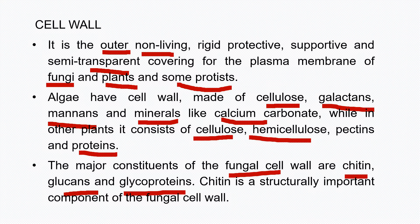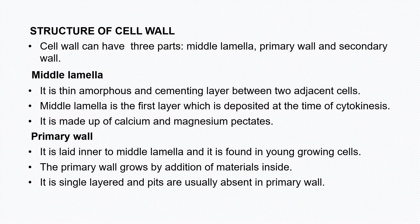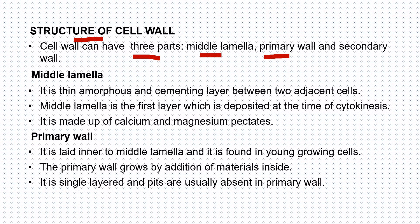So, cell wall is present outside the cell membrane. It is non-living, rigid, protective and supportive in function. Now let's start to discuss the structure of cell wall. A cell wall can have three parts: first is middle lamella, then primary wall, and third is secondary wall.